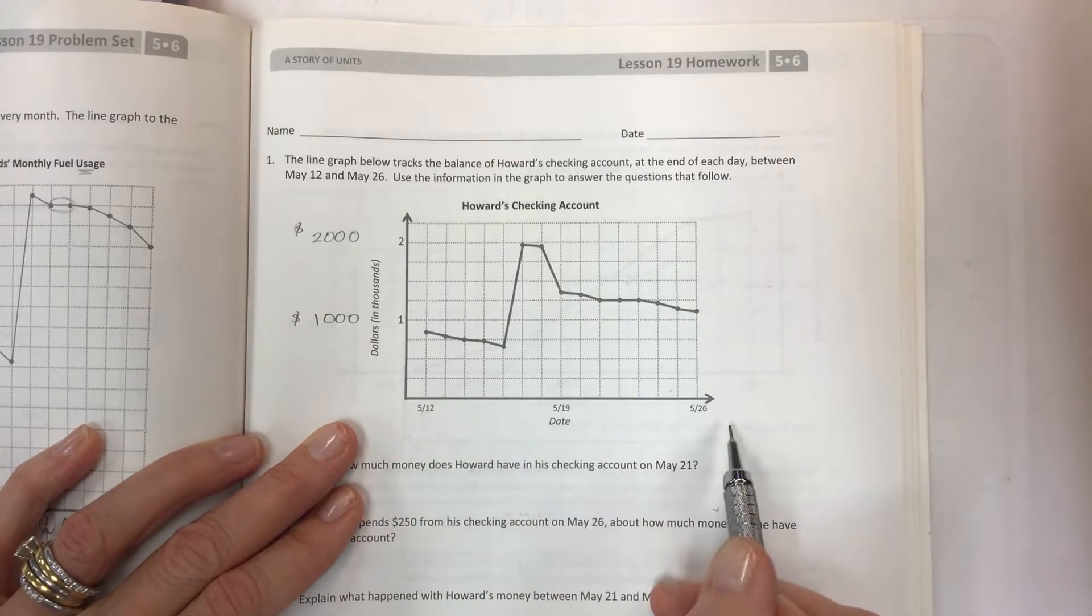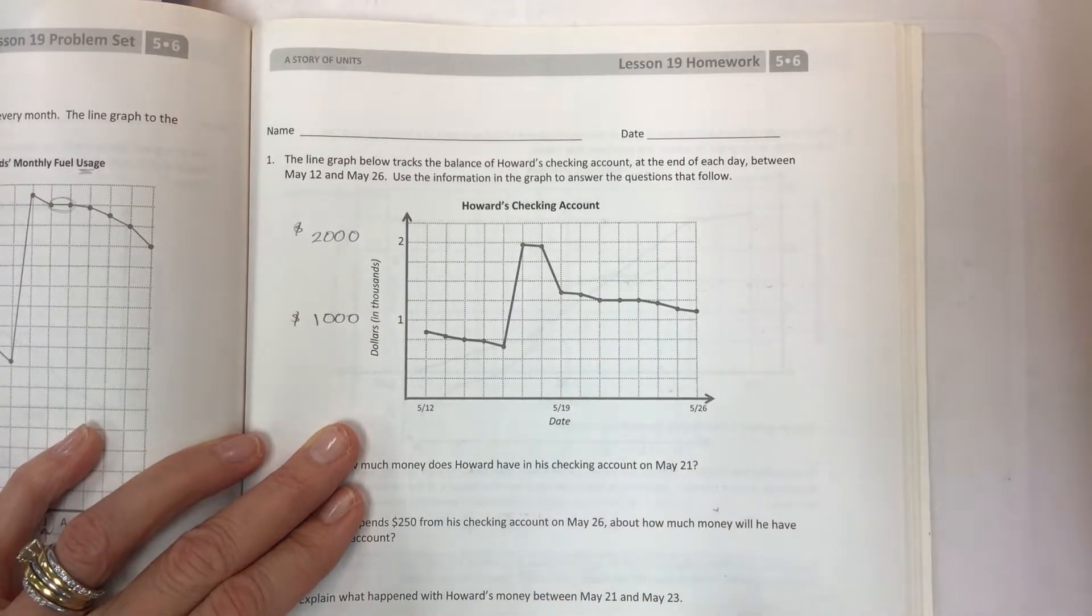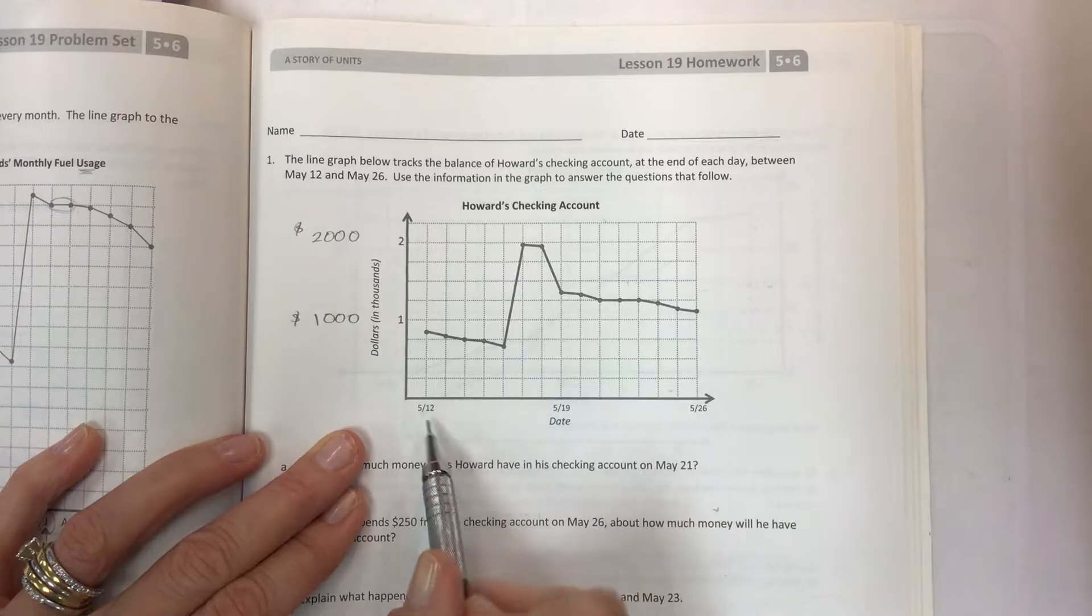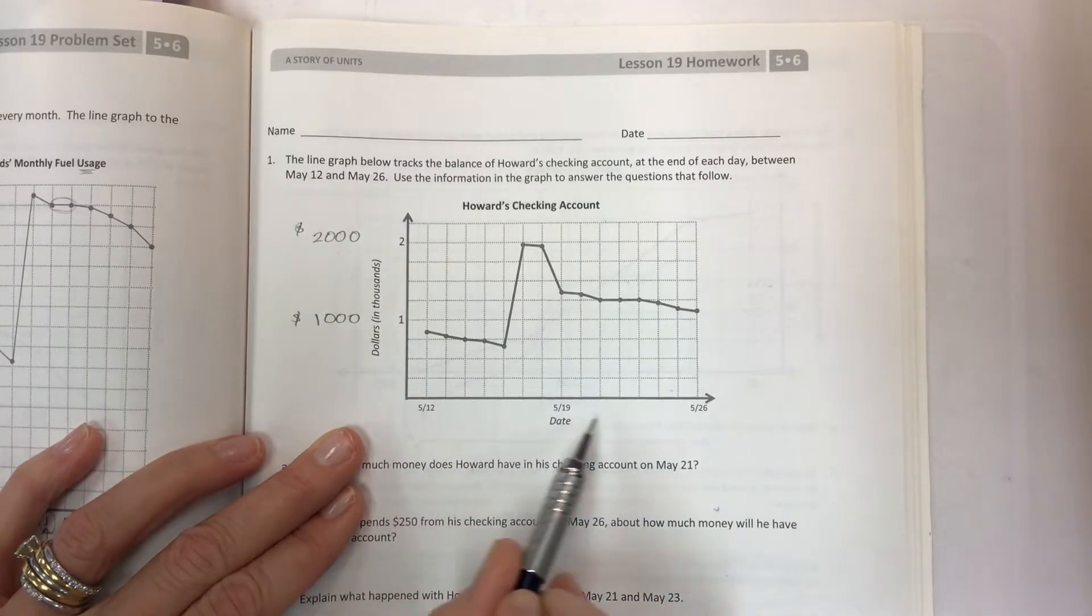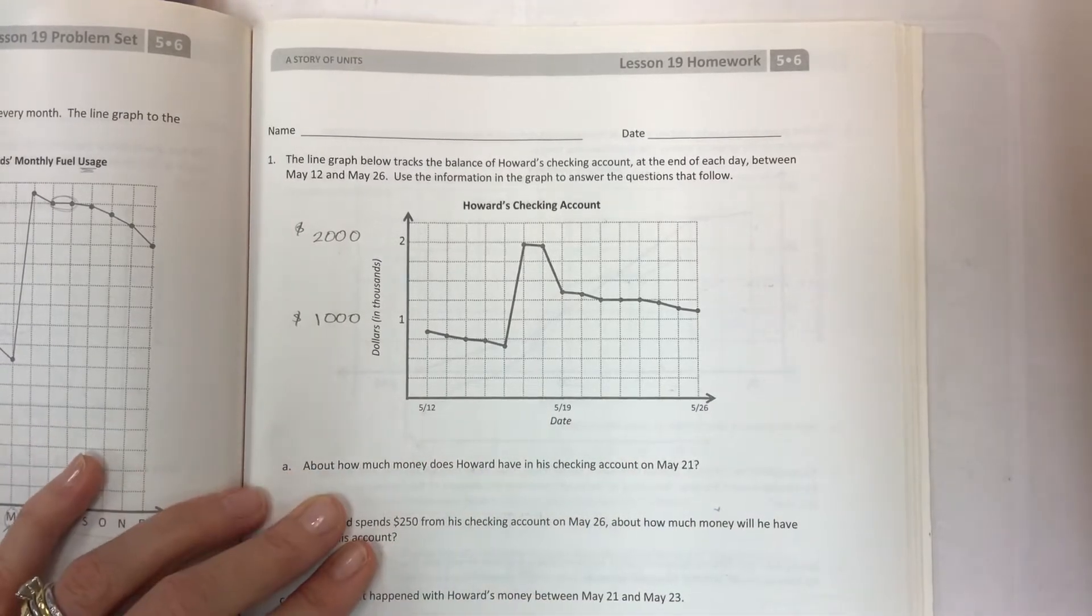Also, usually on the bottom they will put time, whether it's the time of day or time of year. Time is always moving forward, so it really makes sense to have time on the bottom of a graph.